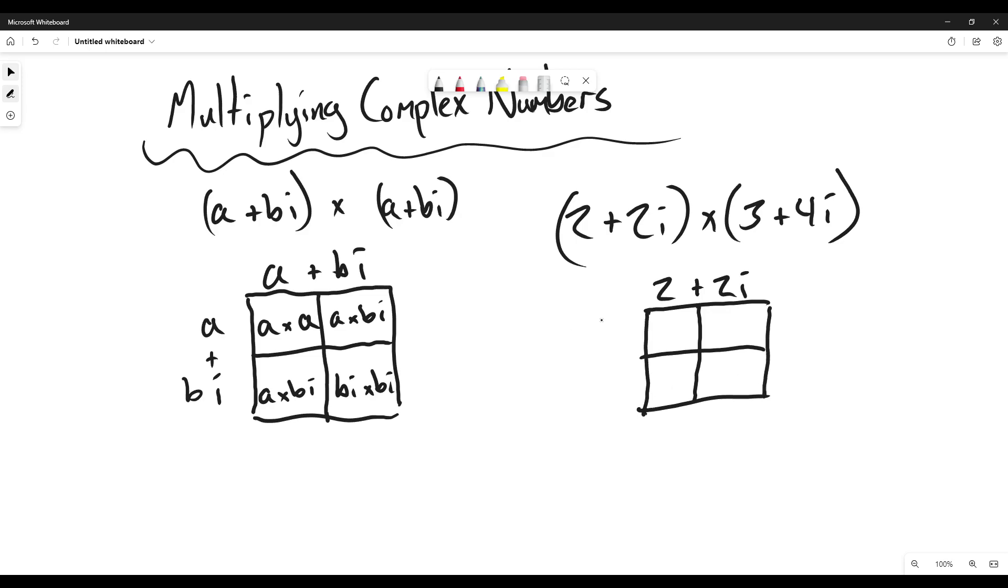And then 3 + 4i. So we have 2 times 3, 6. 3 times 2i which is 6i.